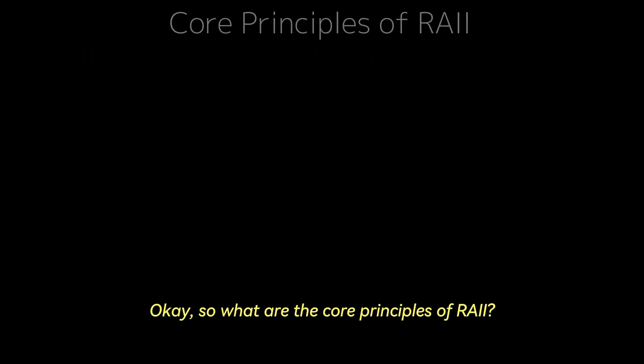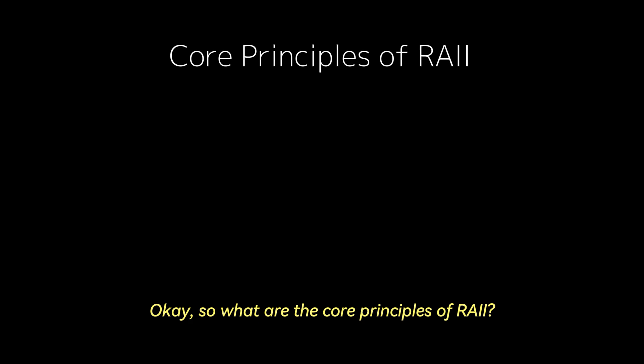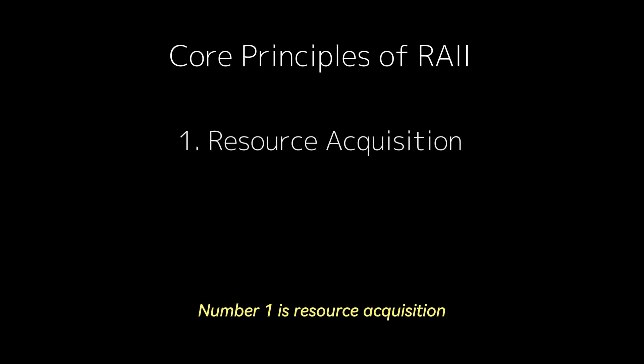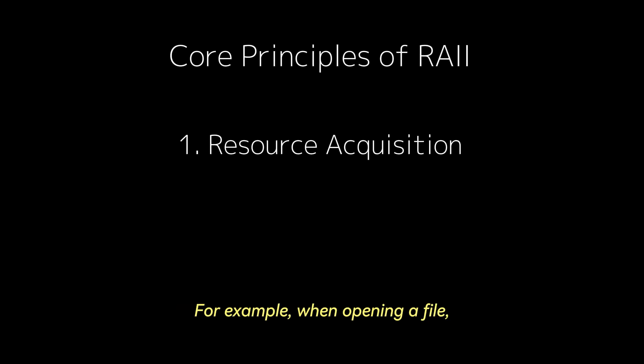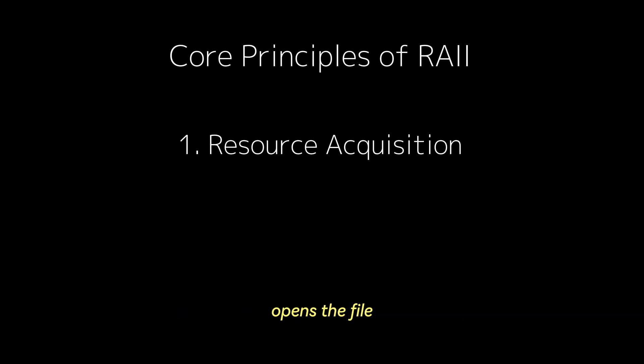So what are the core principles of RAII? Number one is resource acquisition. When an object is created, it acquires the necessary resources it needs. For example, when opening a file, the constructor of the file handling object opens the file.